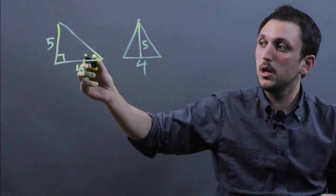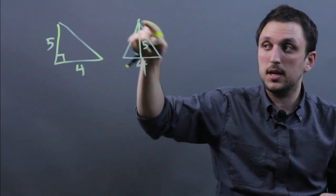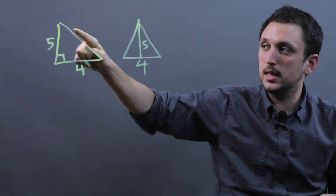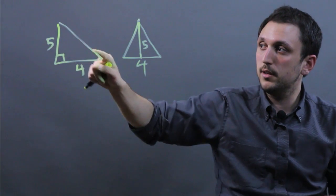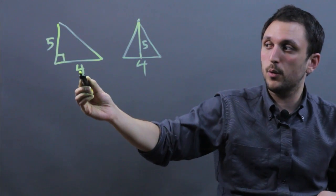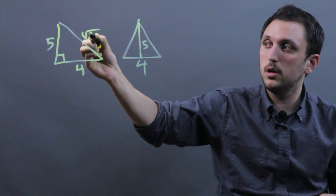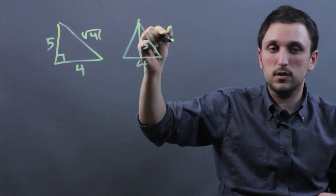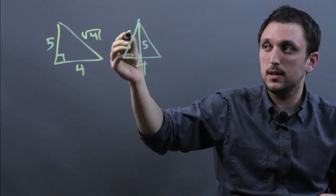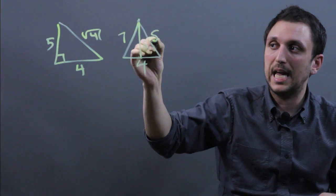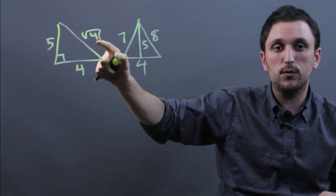But here we have a 90 degree angle, and here we do not. So that would mean that the other side lengths are not equal. This, for example, would be 5 squared plus 4 squared, so root 41. And here this looks more like isosceles or scalene, so this could be 7, this could be 8. It definitely is not root 41.